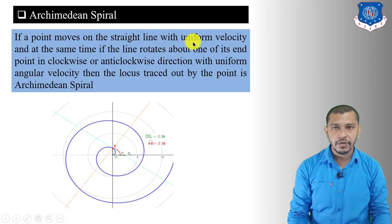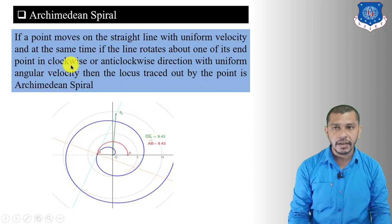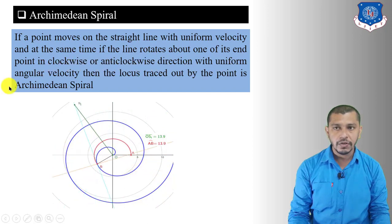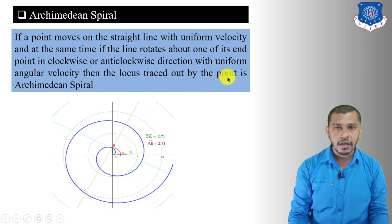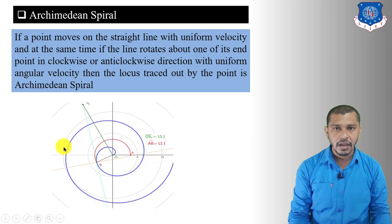If a point moves on a straight line with uniform velocity, and at the same time the line rotates about one of its endpoints in clockwise or anticlockwise direction with uniform angular velocity, then the locus traced out by the point is an Archimedean spiral. Here in this figure you can see that point A moves along the straight line while the line rotates anticlockwise, tracing the curve.